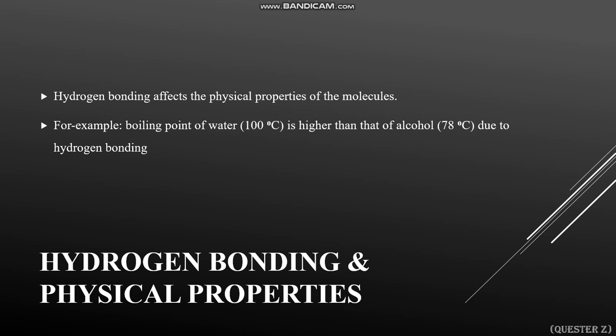Hydrogen bonding affects the physical properties of molecules, particularly boiling point. Where hydrogen bonding is stronger, the boiling point is higher. For example, the boiling point of water is 100°C, which is higher than that of alcohol at 78°C, because hydrogen bonding in water is more efficient and requires a larger force to break down.